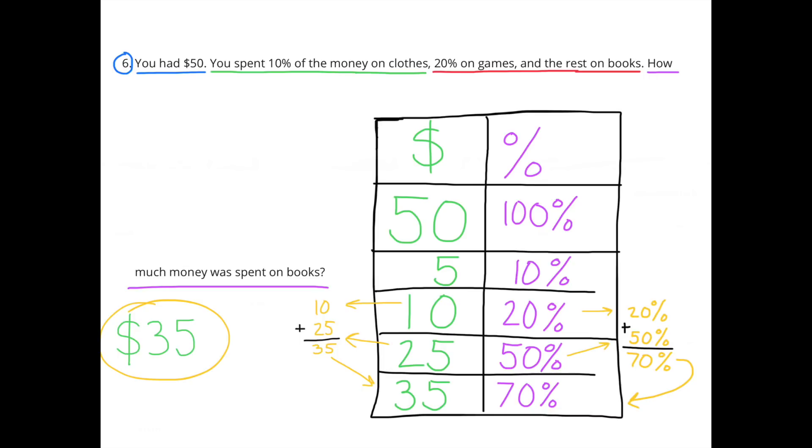Also, 50% is half of 100%, and half of $50 is $25. Since you spent 10% of the money on clothes, and 20% of the money on games, you spent a total of 30% of the money on clothes and games. That means that you still have 70% of the money to spend on books.